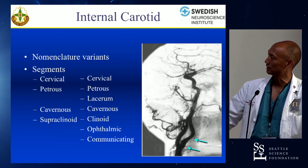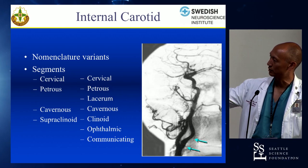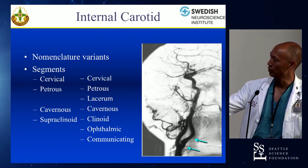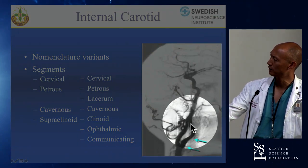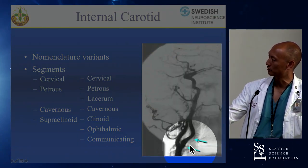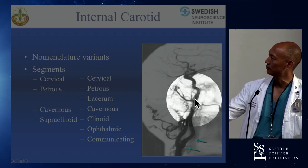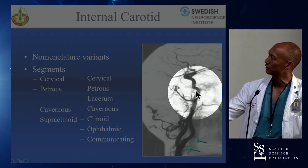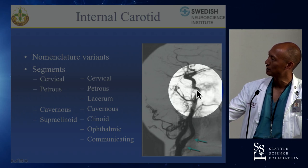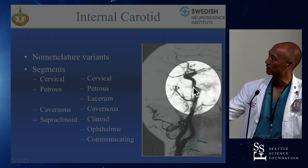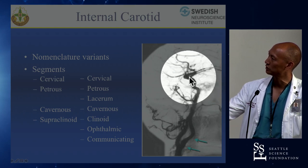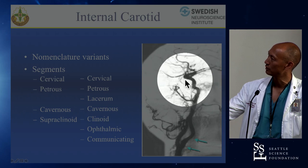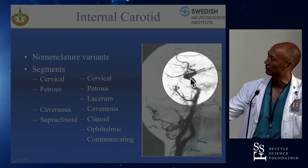Looking at the segments on angiogram: here is a fairly low carotid bifurcation. You have the C1 segment, the vertical cervical carotid artery. You can see a subtraction artifact where the carotid artery is entering the bone. Then you have the petrous segment, the posterior genu, and the lacerum segment. Then there's the vertical segment where the petrosal ligament divides the petrous ICA from the cavernous ICA. You have the posterior genu of the cavernous segment, the horizontal segment of the cavernous carotid, and then the siphon.